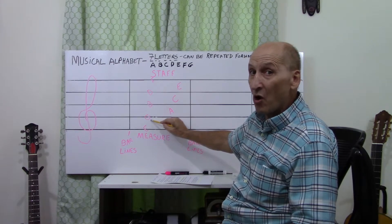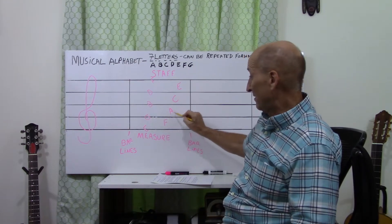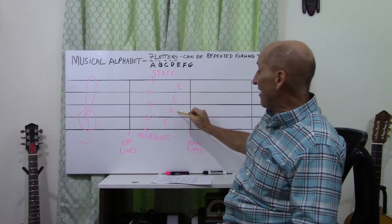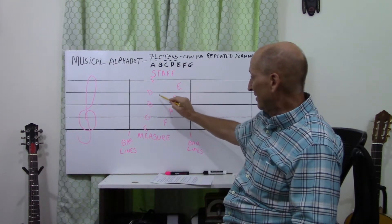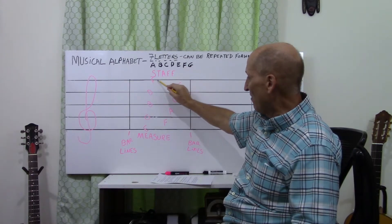G. After G, we know we go back to A. After A, it's B. It's C. It's D. It's E. It's F.